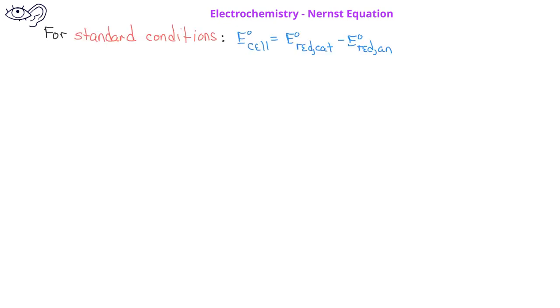In previous lessons, we learned how to determine cell potentials under standard conditions. While this is important to know, it is somewhat limiting since many interesting systems do not have standard conditions. Batteries rarely involve standard conditions, and biological systems do not have standard conditions either.